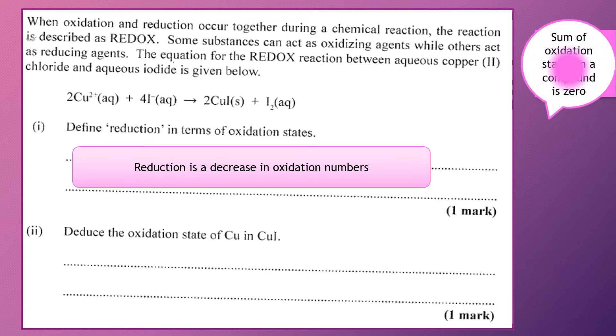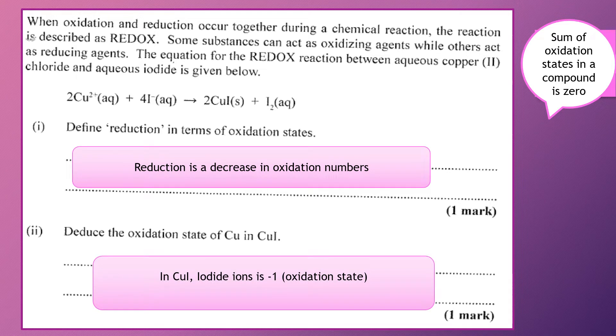So looking at copper iodide, we know iodide ions, and the halide ions normally their oxidation state is minus one.